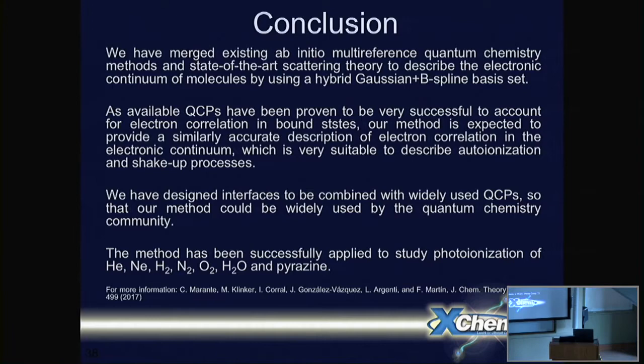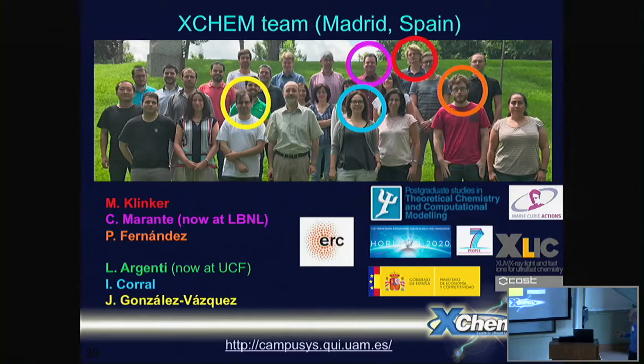In conclusion, we have successfully merged existing ab initio multi-reference quantum chemistry methods with state-of-the-art scattering theory using a hybrid Gaussian and B-spline basis set. We hope that this method will be easily implemented in most quantum chemistry packages so that we can really describe ionization in many molecules. So far, we have applied this method to diatomics; we are working on water, pyrazine, and other molecules. This work has been done by several people, in particular by Marcus Klinker, Carlos Marante, Luca Argenti, Ines Corral, Jesús González Vázquez, and more recently by Pedro Fernández. Thank you for your attention.